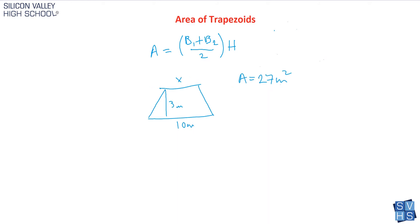Here's a trickier type of problem. Say they give you a trapezoid with a height of 3 — perpendicular to the base — and they give you one base of 10, but you don't know the top base. Instead, you're given the area. In the formula, you typically have base 1, base 2, and height and solve for area. But here, they give you the area and two of the three variables, and you solve for the missing one.